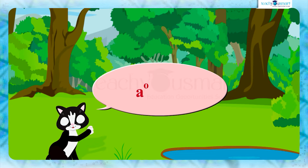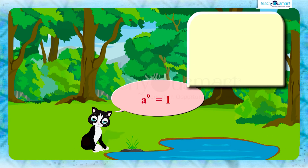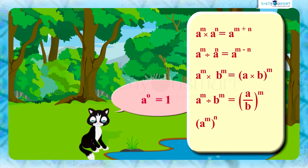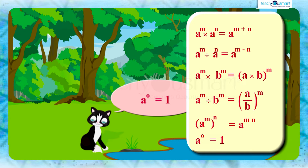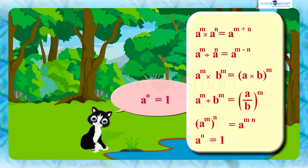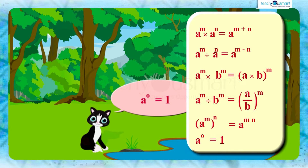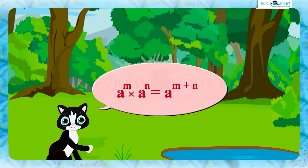a raised to 0 equals 1. Do these laws also hold if the exponents are negative? Let's check it one by one. First, we consider the law a raised to m multiplied by a raised to n equals a raised to m plus n, where m and n are whole numbers.